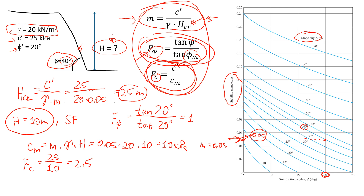So now we compare the two safety factors: SF for friction angle is 1, and SF for cohesion is 2.5. You see that they're not equal. So now we're going to use the same procedure, but instead of selecting a mobilized friction angle of 20 degrees, we are going to change it to 15 degrees. Then we repeat this procedure — estimate the safety factors for cohesion and friction angle — and compare them again. In the end, we would like to get equal safety factors. I already did this using Excel spreadsheets and I will show you in the next slide how it worked.